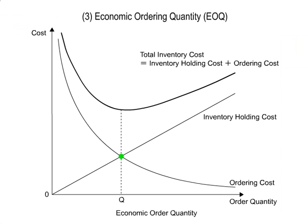The graph shows how inventory holding cost, ordering cost, and total inventory cost — holding cost plus ordering cost — changes according to inventory quantity. In this case, the order quantity Q which minimizes the total inventory cost becomes the EOQ.